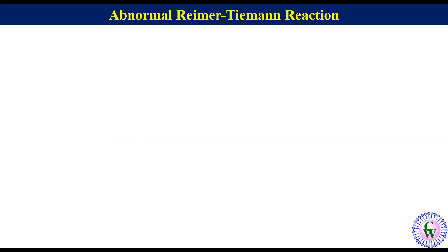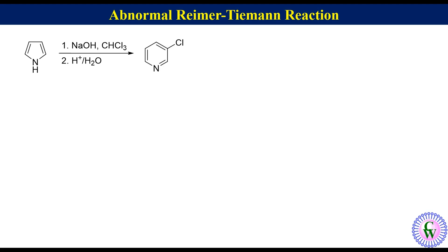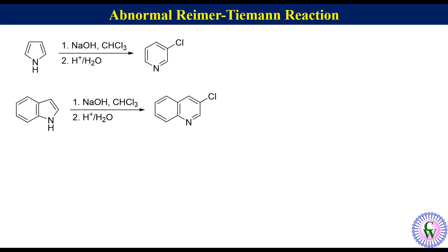Abnormal Reimer-Tiemann reaction: Under Reimer-Tiemann conditions, pyrrole instead of forming 2-formylpyrrole produces 3-chloropyridine, while indole instead of forming 3-formylindole produces 3-chloroquinoline. This reaction is also known as the Ciamician-Dennstedt rearrangement. The mechanism for the transformation of pyrrole to 3-chloropyridine will be covered; a similar mechanism applies for the conversion of indole to 3-chloroquinoline.